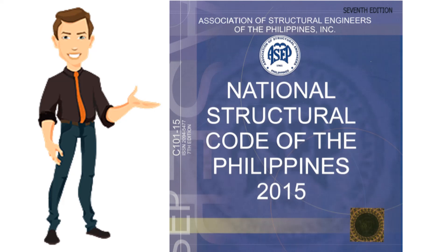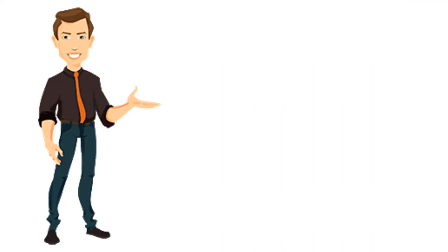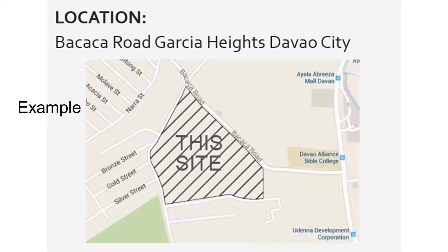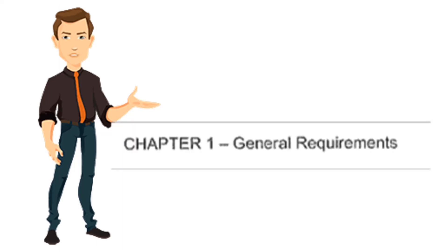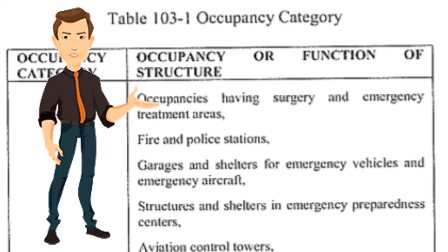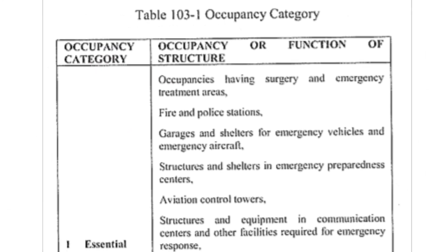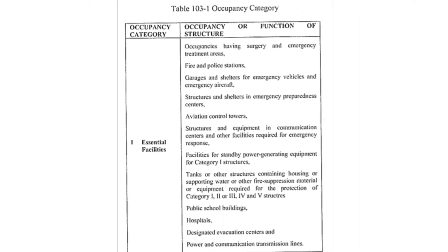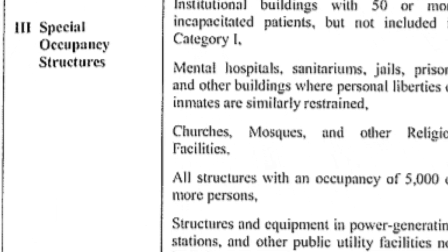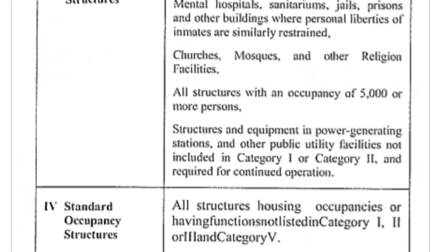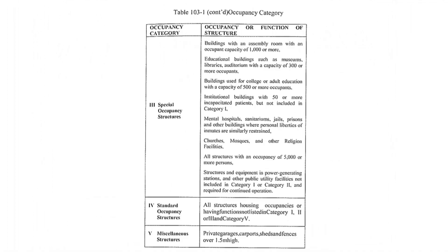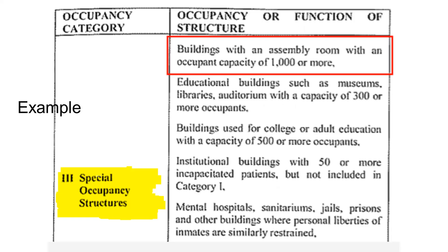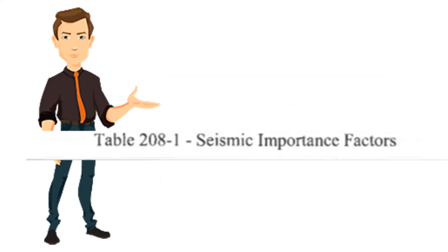All factors and coefficients can be found in the National Structural Code of the Philippines. The location of the structure is the area where you are going to build. The occupancy category can be found in Chapter 1, General Requirements, Table 103-1 — it can be essential facilities, hazardous facilities, special occupancy structures, standard occupancy structures, or miscellaneous structures. Find which category your structure belongs to.